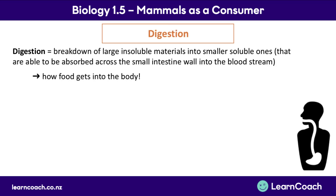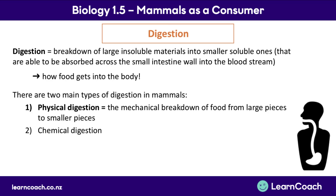So what's digestion? Digestion is the breakdown of large food materials into smaller materials, ultimately so that these food molecules are able to be absorbed across the small intestine wall into the bloodstream — it's one of the ways that food gets into the body. There are two main types of digestion in mammals: physical digestion, which we're focusing on in this video, and chemical digestion, which will be covered in the next video.